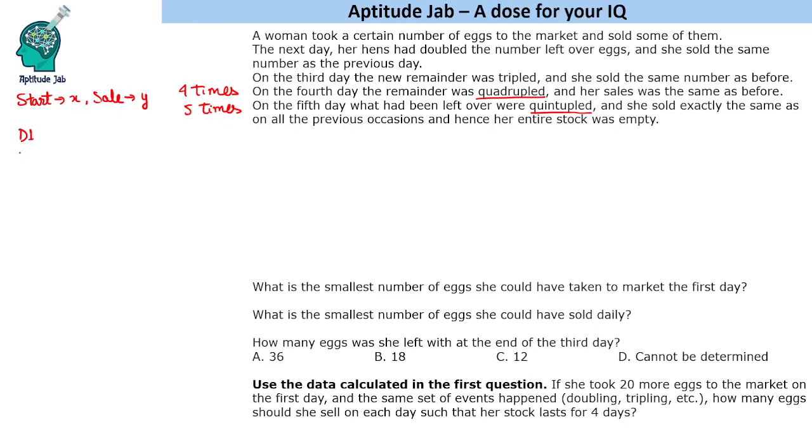So we have five days. She starts with x, sells y, so the remainder will be x minus y on the first day. On the second day, this will become two times, so 2x minus 2y. She sells y, so now she is left with 2x minus 3y.